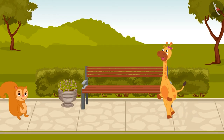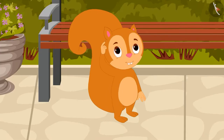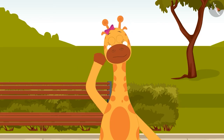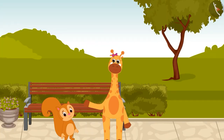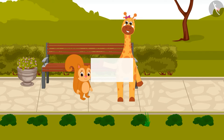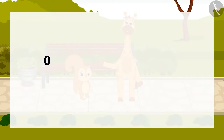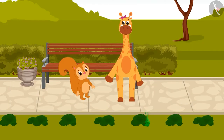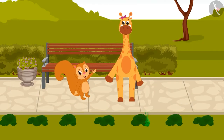Gaffee and Sunny met in a garden. They are thinking of a game to play. Gaffee got an idea. Sunny, see, all the bushes are in one straight line. Come, let's jump over them and count from 0 to 100 and back from 100 to 0. This is such a great idea. I will start first.